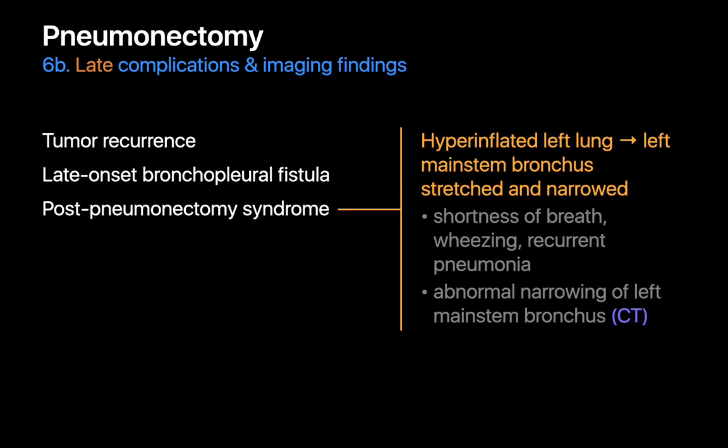Finally, post-pneumonectomy syndrome is a late complication we look for, predominantly in patients who've had a right-sided pneumonectomy. The remaining left lung can become quite hyperinflated, and if the mediastinum shifts rightward by a large enough amount, the left mainstem bronchus can become stretched and narrowed, compromising airflow. On chest CT, we may observe abnormal narrowing of the left mainstem bronchus, and these patients often present with dyspnea, wheezing, or recurrent pneumonia.